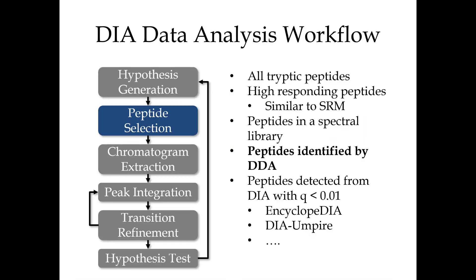You can throw every peptide you can see into your quantitative matrix, but some of them are just going to mess you up — they're just not going to be helpful. So we'll do a first-level refinement. Skyline has had this concept of refinement for a long time. The data analysis workflow options are: try all tryptic peptides, do high-responding peptides similar to SRM, or peptides identified by DDA.